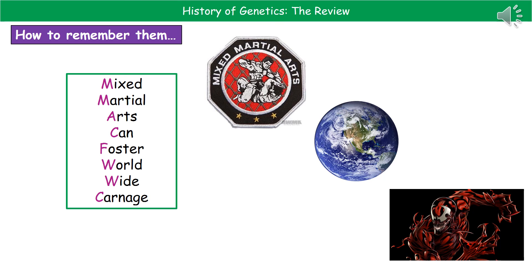Because they could ask you about any of these scientists in the history of genetics, it's always good to come up with some way to help you remember them — mnemonics are fantastic for this. For example: 'Mixed martial arts can foster worldwide carnage' gives you the first letters of each scientist in order. You don't have to use that one — find something that works for you. If you're a visual learner, come up with something that has visual images next to it. But make sure you know each of those scientists and what they did.